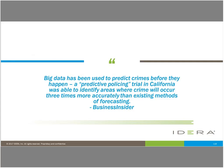Big data has been used to predict crimes before they happen. A predictive policing trial in California was able to identify areas where crime will occur three times more accurately than existing methods of forecasting, because they're able to take all that data and see that there are precursors that take place before the crime even starts — kind of like Minority Report.